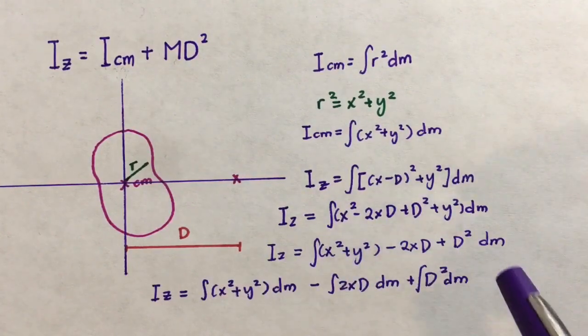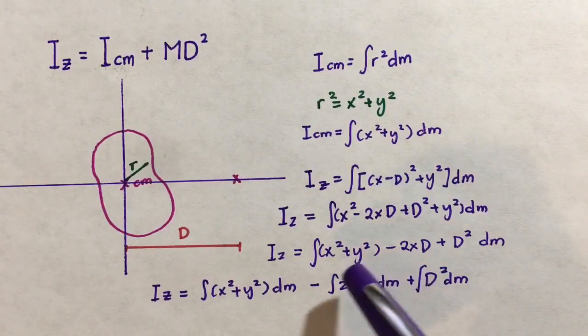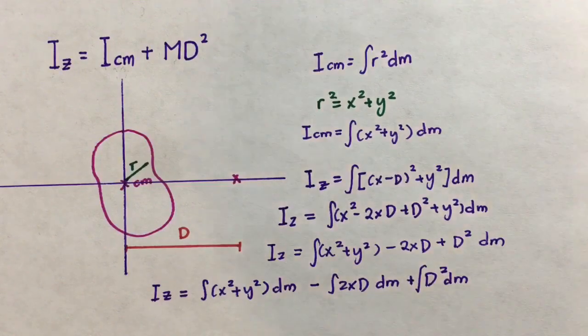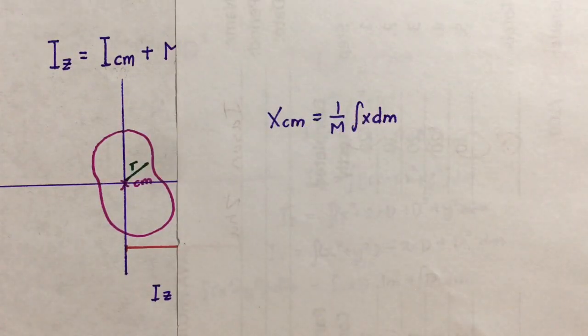Next, because the integral is a linear operator, we can then break the integral down as a sum of three smaller integrals. But before we move on, we need to understand how to find the center of mass of the original object.